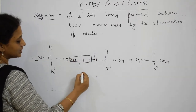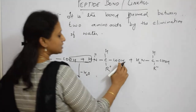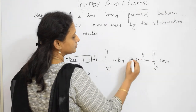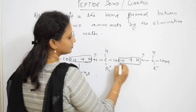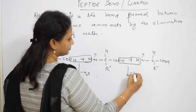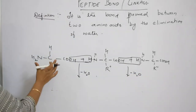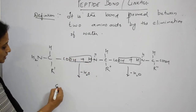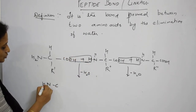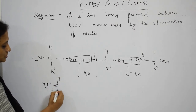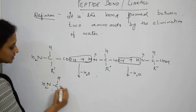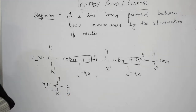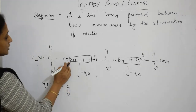The OH from one amino acid and the H from the adjacent amino acid are eliminated, forming water. As a result, this amino acid joins with the next one: the NH2 group on one side and the C=O (carbonyl) on the other, after the water molecule is eliminated.